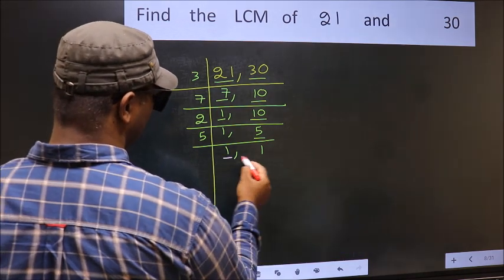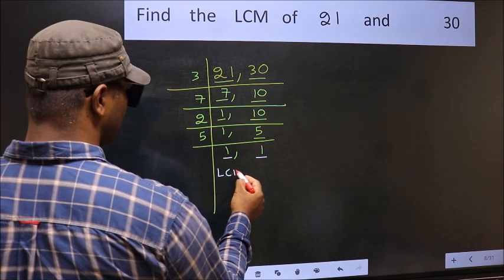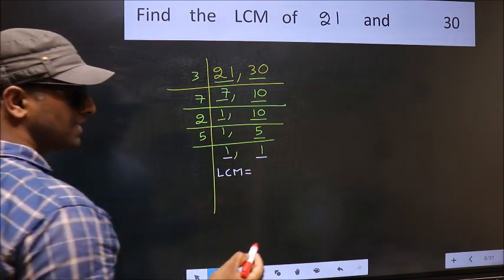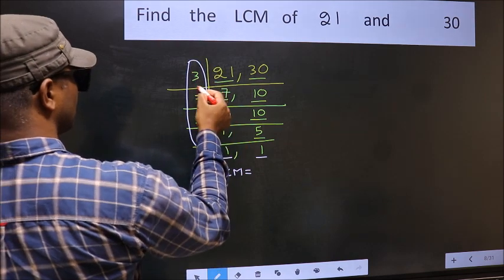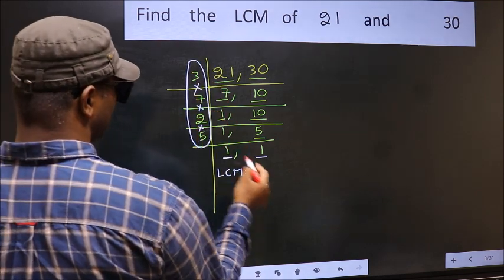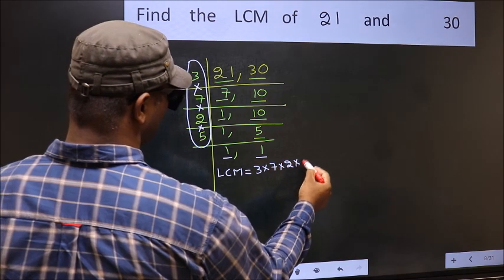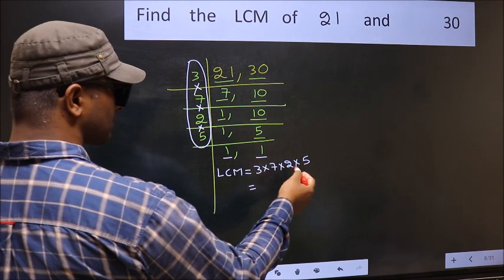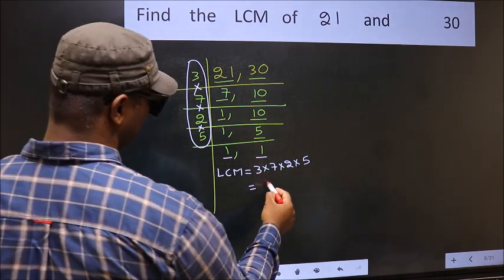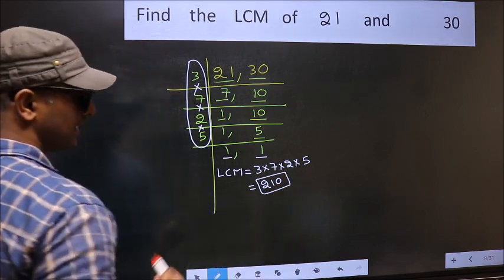So, we got 1 in both places. So, our LCM is the product of these numbers. That is 3 into 7 into 2 into 5. When we multiply these numbers, we get 210 as our LCM.